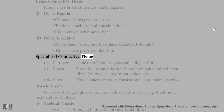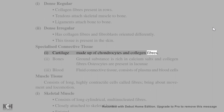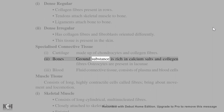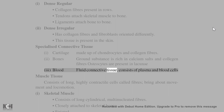Specialized connective tissue includes cartilage, made up of chondrocytes and collagen fibers. Bone has a ground substance rich in calcium salts and collagen fibers; osteocytes are present in lacunae. Blood is a fluid connective tissue consisting of plasma and blood cells.